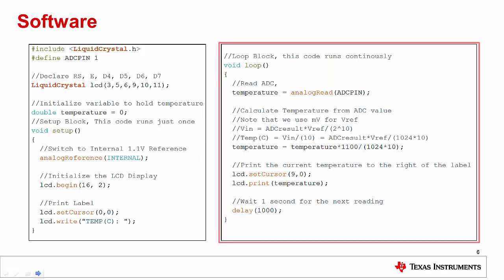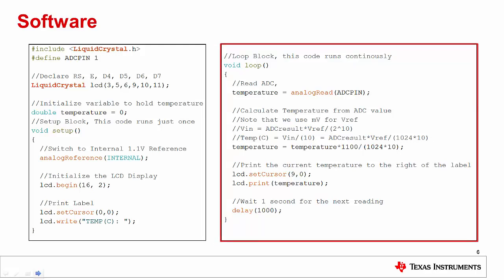Finally, we print the temperature as read by the LM35 and print it to the right of the label on the LCD display. The loop will then delay for one second and repeat, updating the temperature reading about once a second.